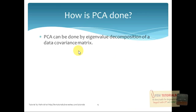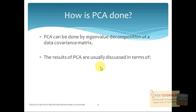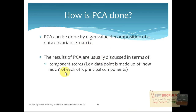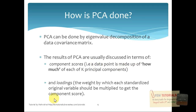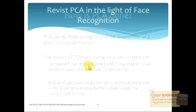How is PCA actually done? The mathematical method is eigenvalue decomposition of the data covariance matrix. The results of PCA are discussed in terms of the component scores — that is, how much of each of the K principal components, or K eigenfaces, makes up a face image — and the loadings, which are the weights. These are the weight vectors I showed you before. That is all for understanding PCA before we look at how it actually works.